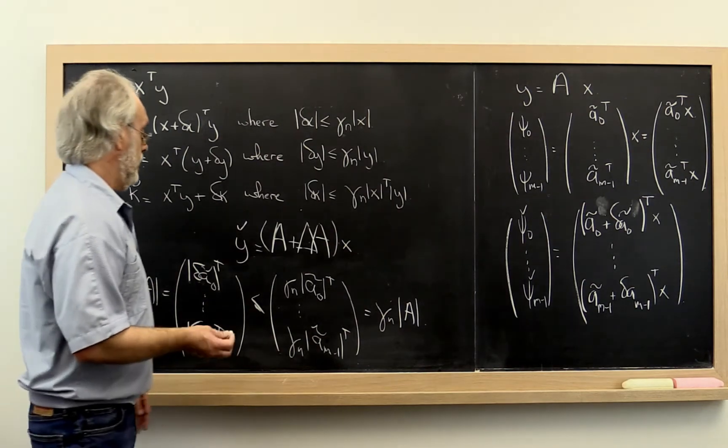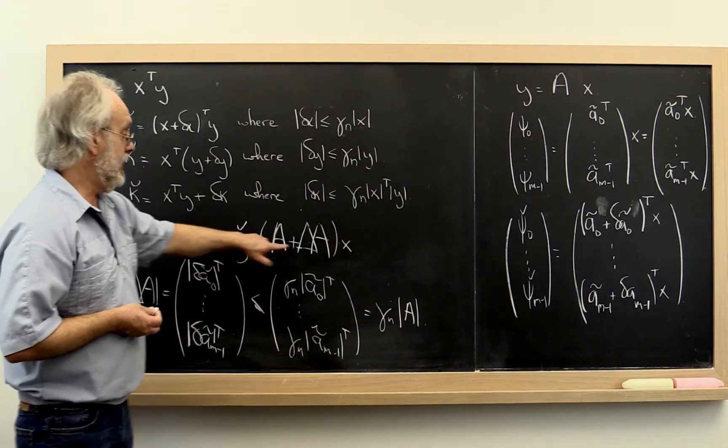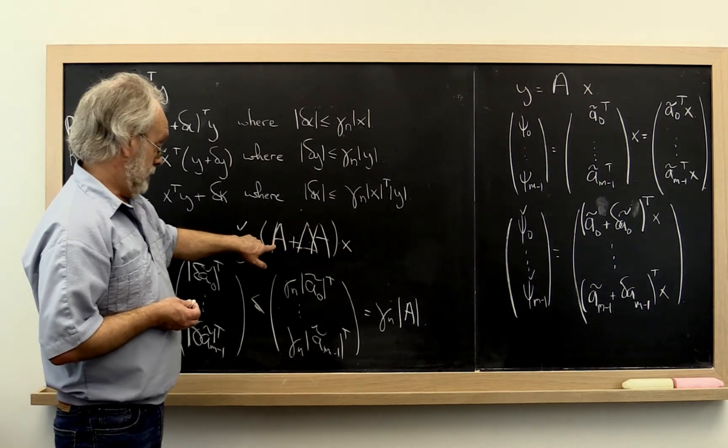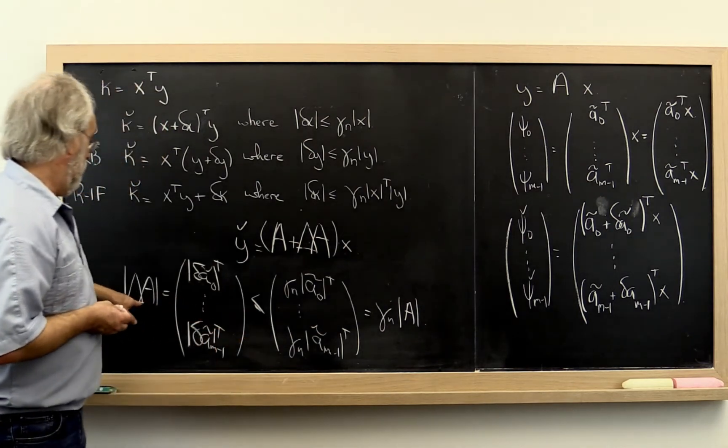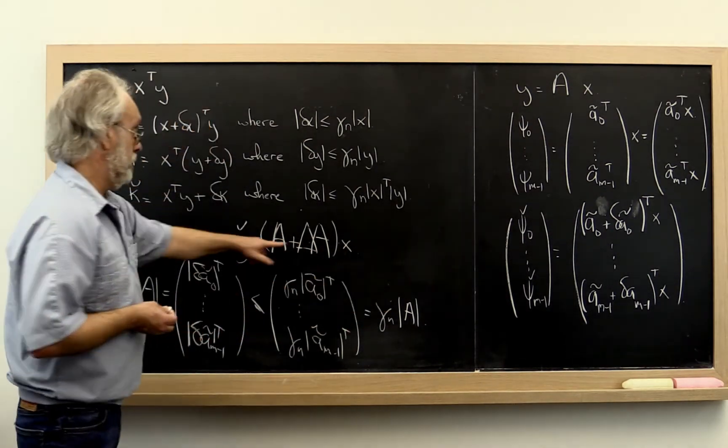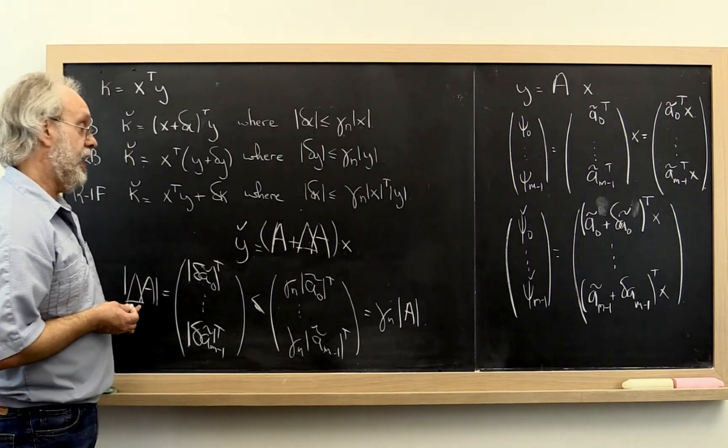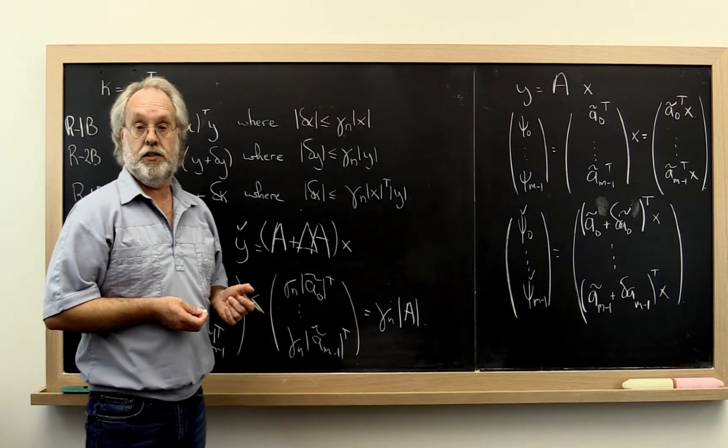So what we conclude is that the computed Y is equal to the result of a matrix-vector multiply with a slightly perturbed matrix A, where we can put a bound on that matrix, that perturbation, that delta A, in terms of the matrix A to which it's a perturbation.